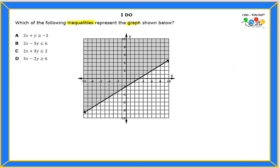I want you to look at the answer choices and notice how all of them are not in slope-intercept form. That means the very first thing we want to do is convert them to slope-intercept form before we compare them to the graph. So let's start with letter A, and we're going to work the problem as if it's an equation.